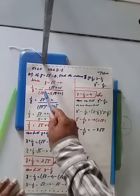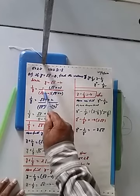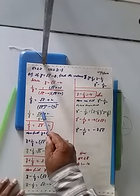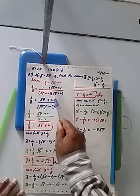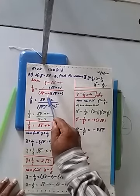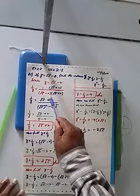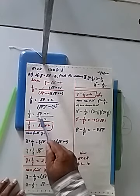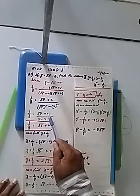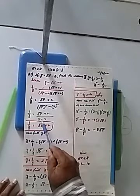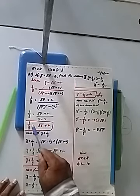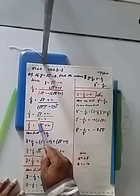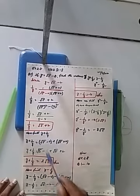Multiplying with 1, the numerator gives 1 into under root 5 plus 2. Now apply the difference of two squares: under root 5 whole square minus 2 whole square. It becomes 1 upon y equal to under root 5 plus 2 divided by 5 minus 4. Since 5 minus 4 equals 1, we get 1 upon y equal to under root 5 plus 2.